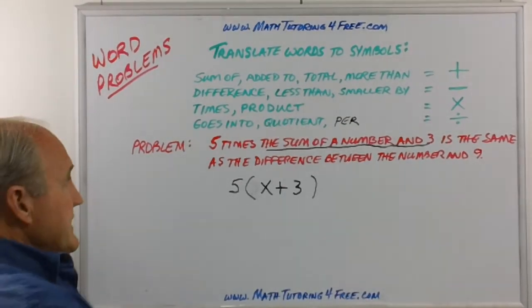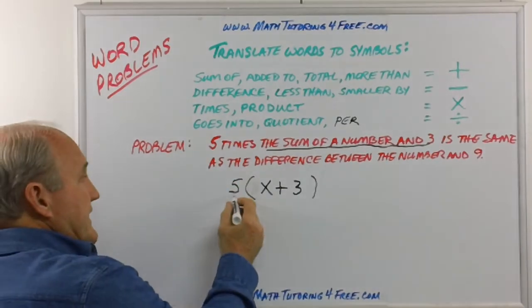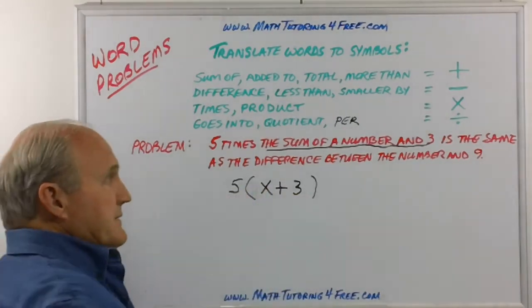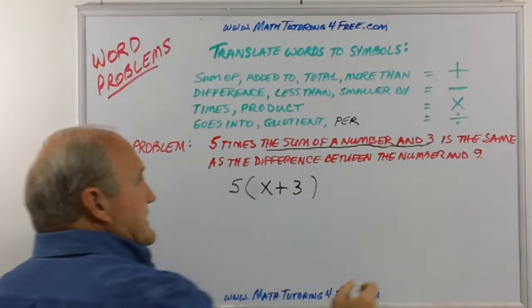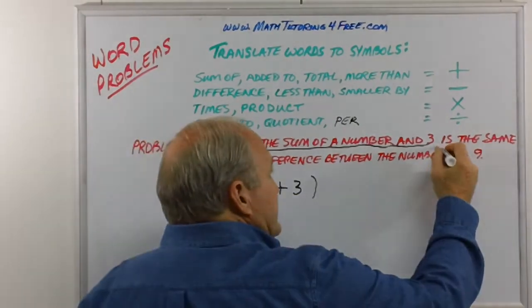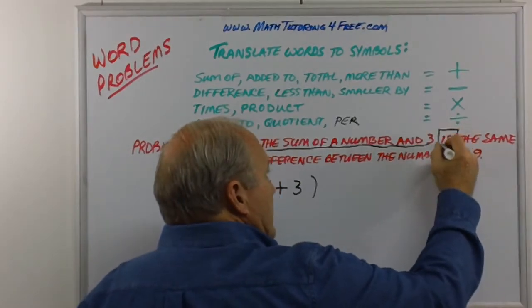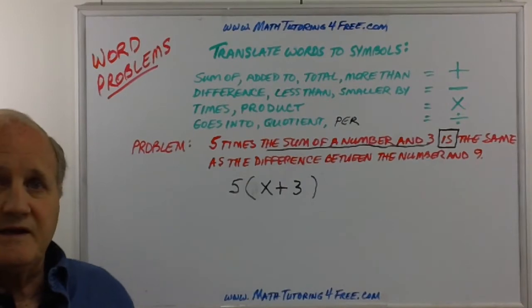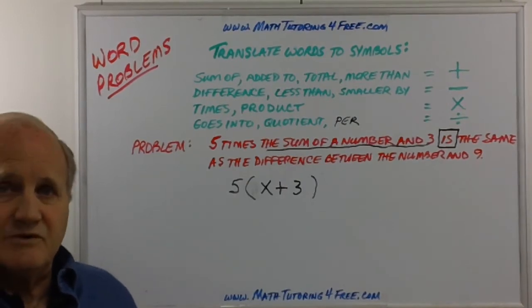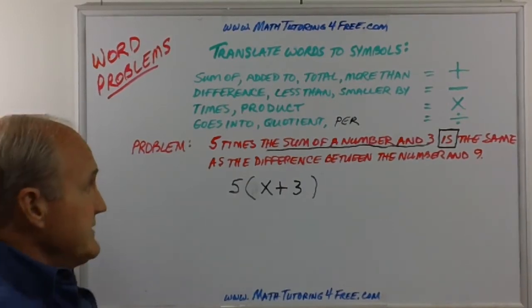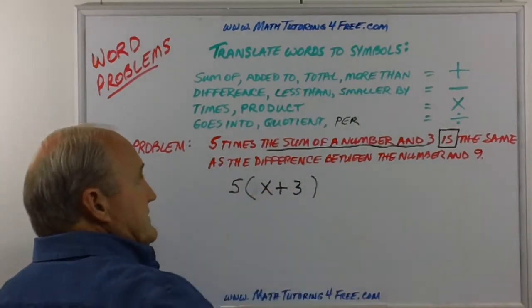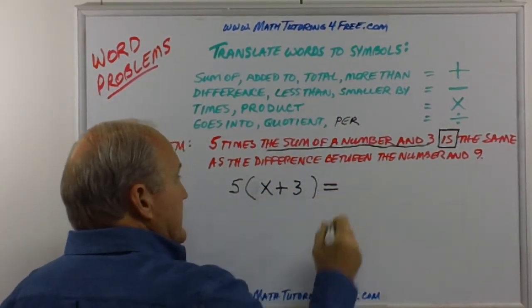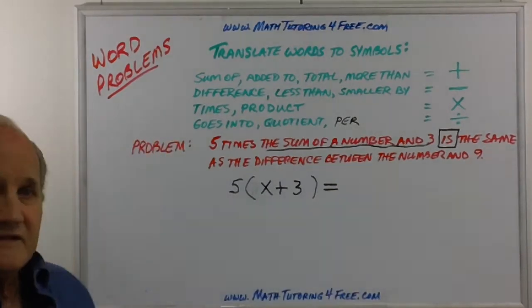So the sum of a number and three we can symbolize with X plus 3 in the parentheses and we say five times that. Well, five is outside the parentheses so once we figure this out we'll multiply it by five. Now here's the key of the problem though. In fact, you always want to be looking for there's got to be an equal sign someplace. Usually 'is' is the word that is key in that case. So it says five times the sum of a number and three is, so right away equals.